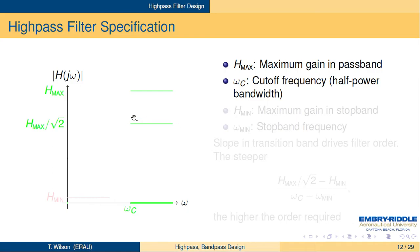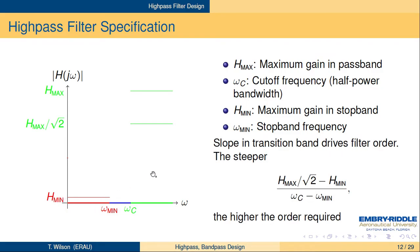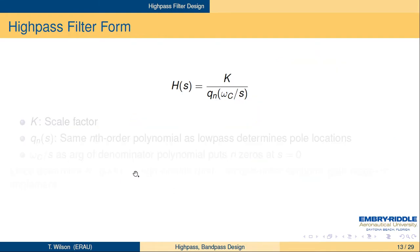For a high-pass specification, the pass band is at high frequencies — ω greater than some ω_C. The stop band is on the left side of the graph between 0 and ω_min, and the transition region is in between. The steeper the slope required there, the higher the filter order needed. The transfer function form uses Q_n(ω_C/S) instead of Q_n(S/ω_C), which inverts the frequency variable and puts the poles into zeros in the numerator.